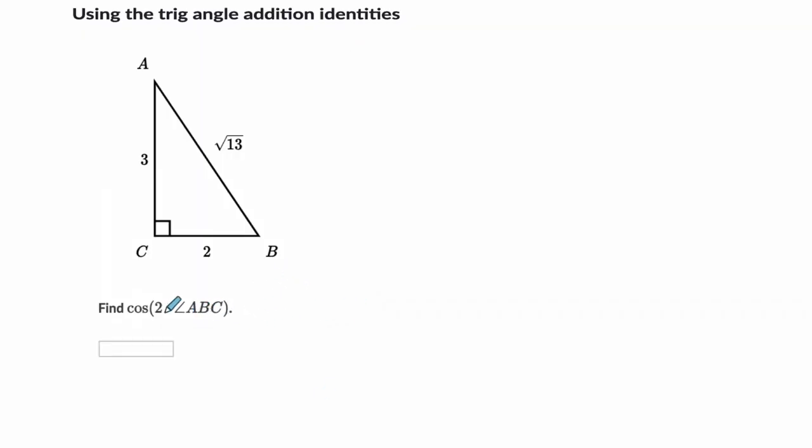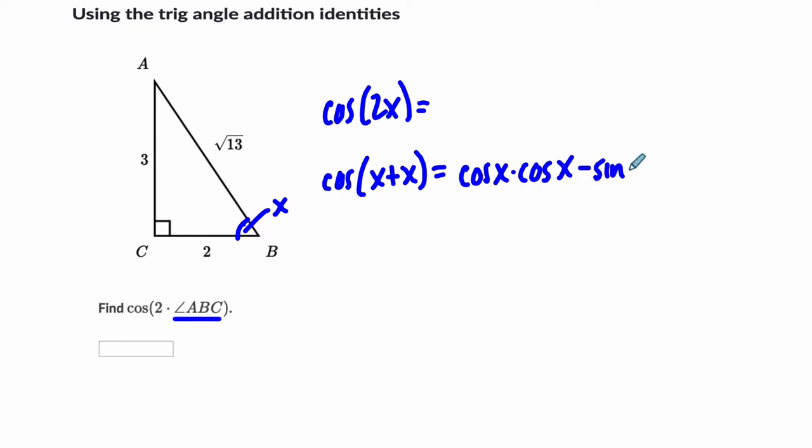They want us to find cosine of twice angle ABC. So that's this angle right here, let's just call that x. So the cosine of 2x, that's a double angle formula, but that has to be the same thing as the cosine of x plus x. And we know that that is the cosine of x times the cosine of x minus the sine of x times sine of x. And in this triangle,